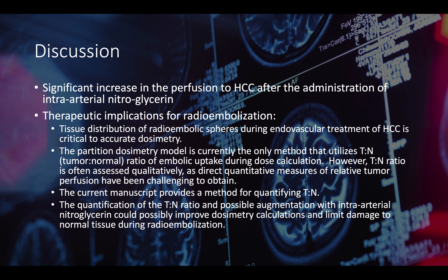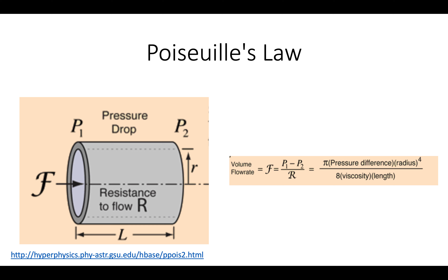Theoretically, down the line, this may lead to a survival benefit. The physics behind this is Poiseuille's Law, which states that flow through a tubular structure is proportional to the radius to the fourth power — meaning flow rate is inversely proportional to resistance and directly proportional to radius. So if there is a two-fold increase in radius, you increase your flow rate by 16 times. Using nitroglycerin to dilate arteries will preferentially increase flow by an order of magnitude to tumor rather than normal tissue, which may have therapeutic implications.